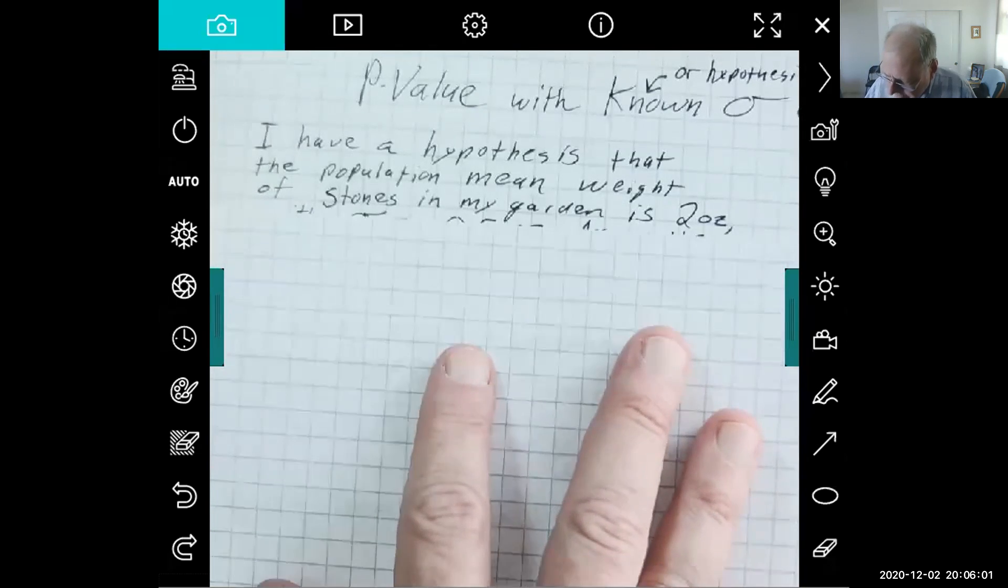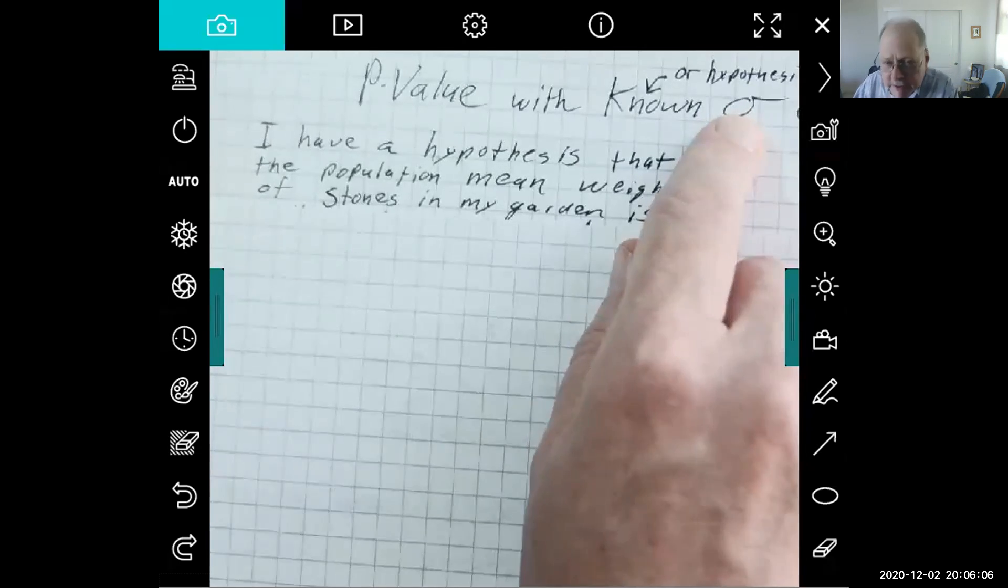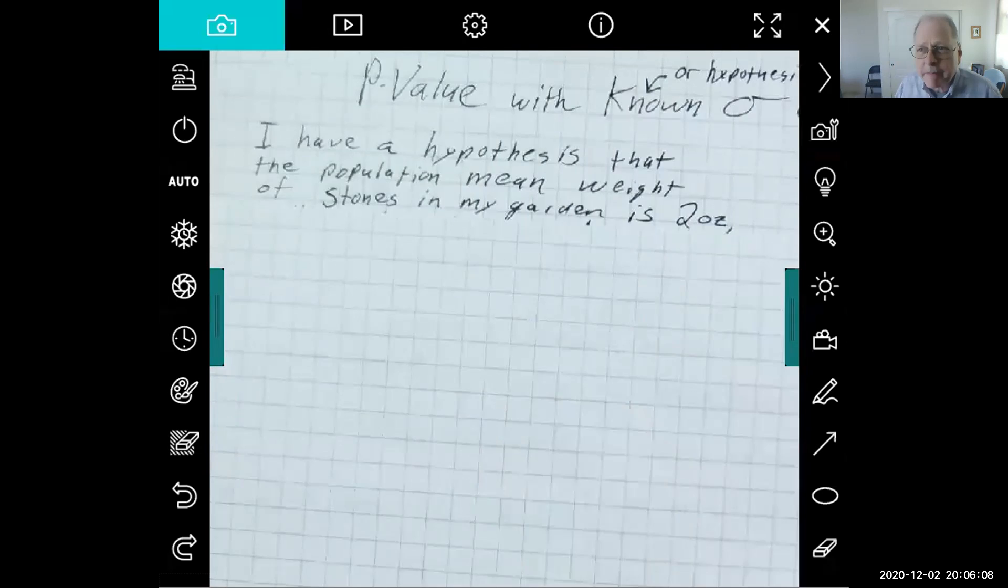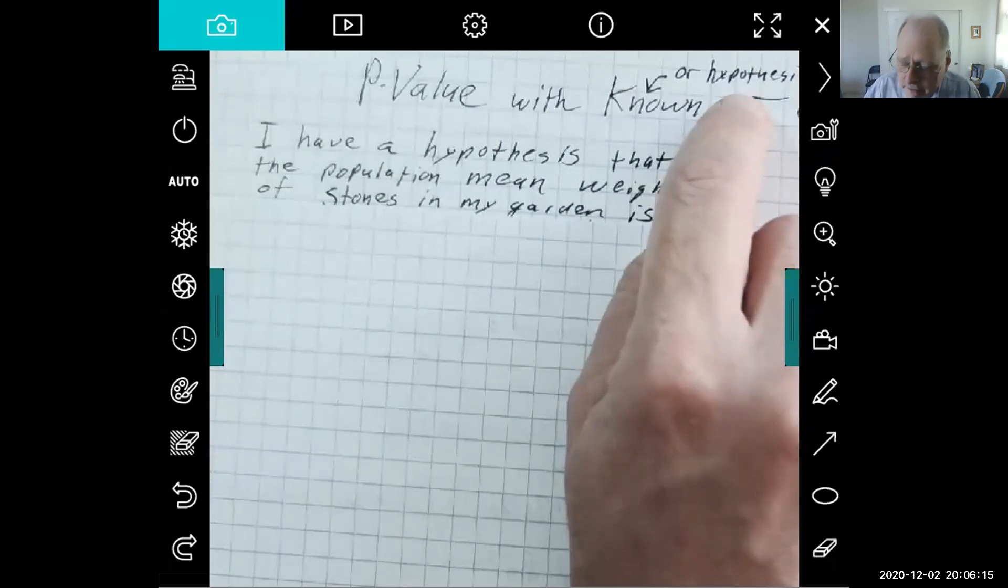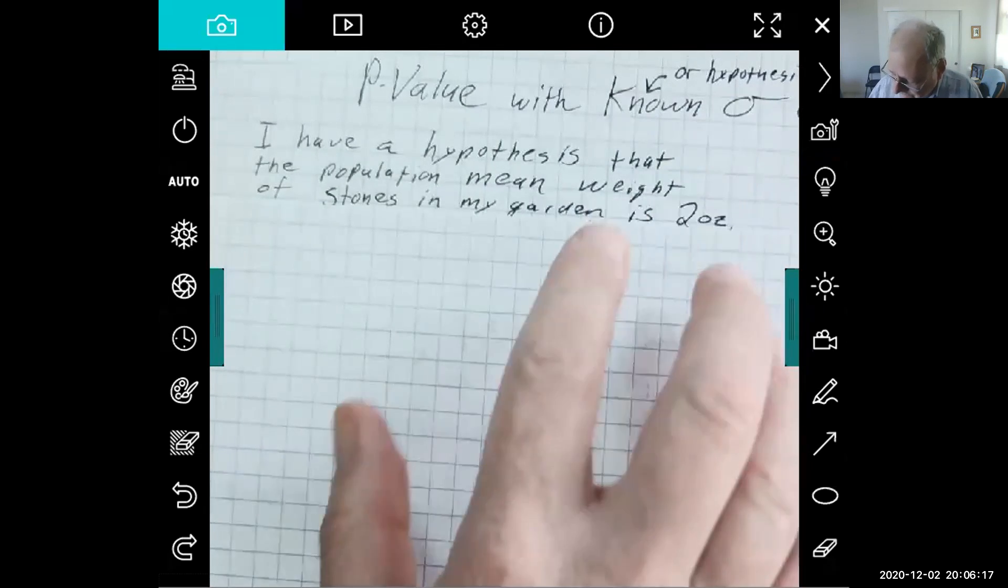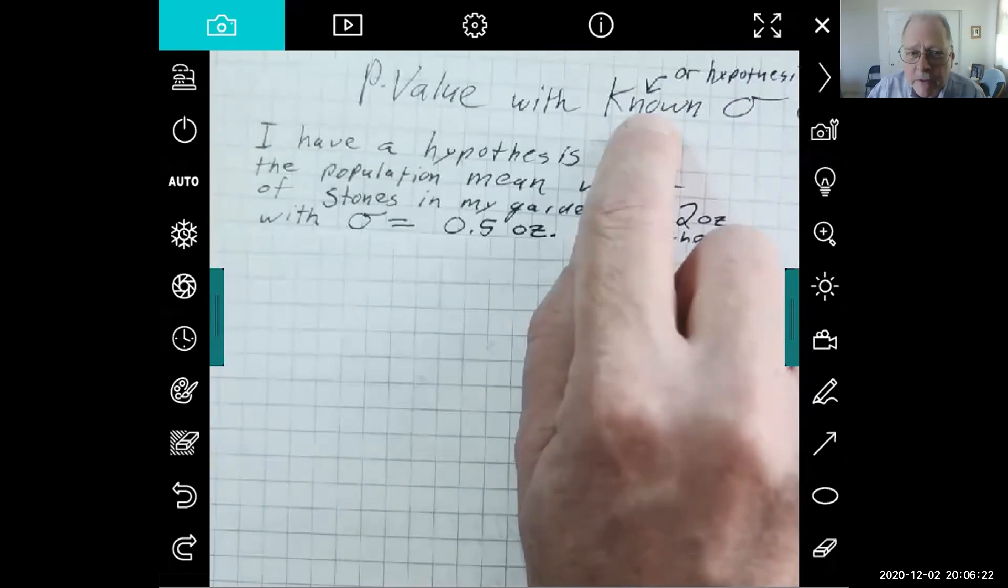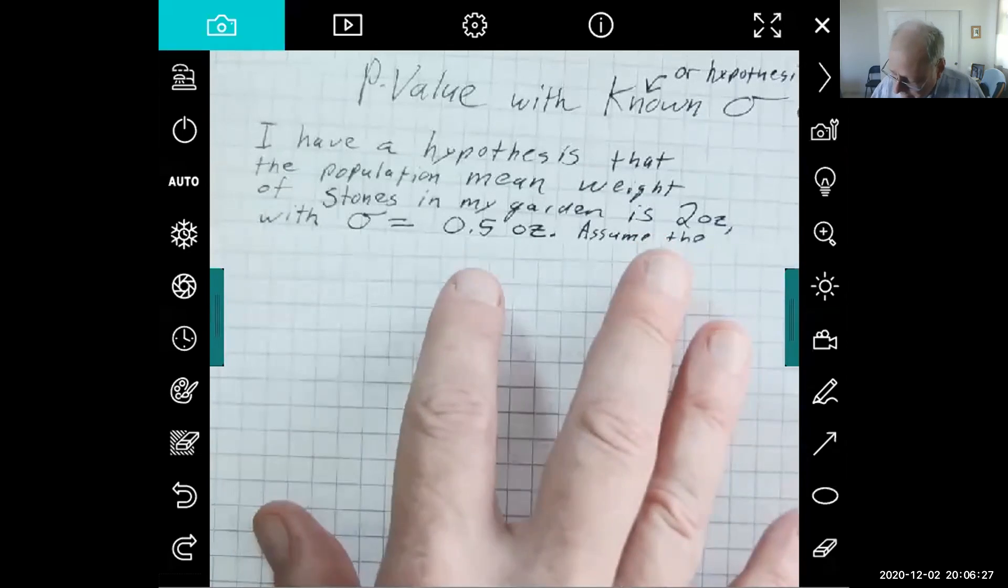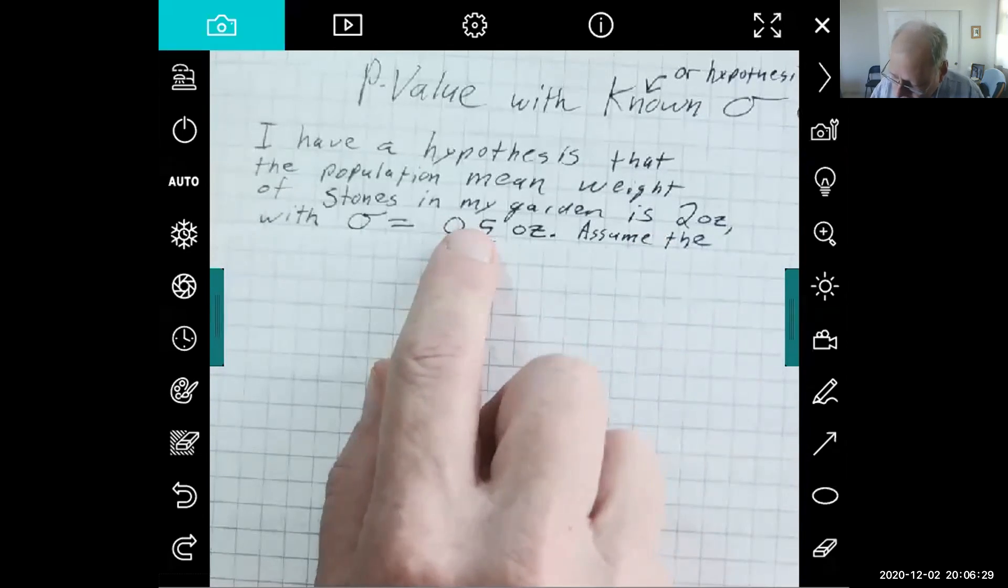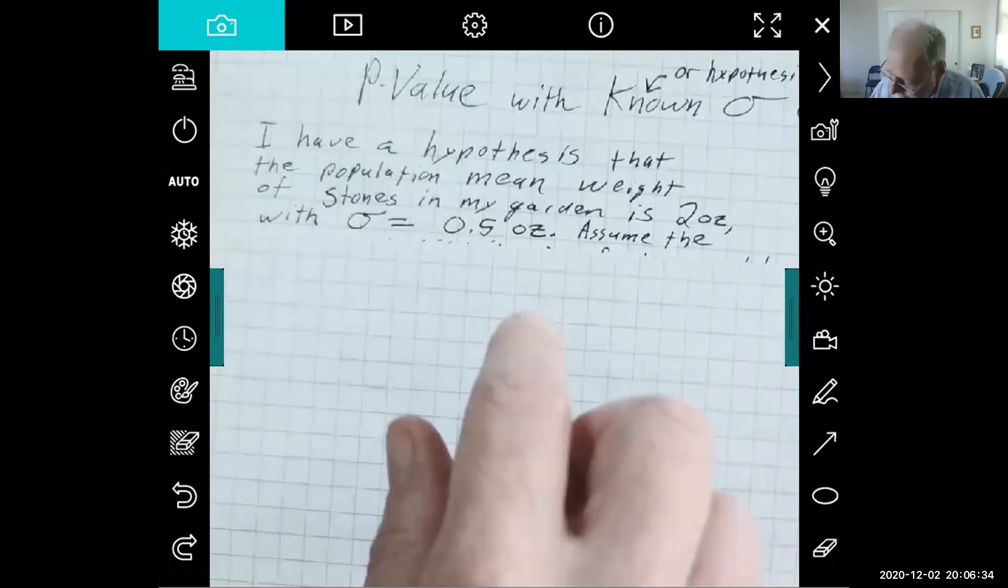And just to make things easy, part of my hypothesis or my educated guess about that big population of a few thousand stones—I have a hypothesis about the standard deviation also. So when I say known standard deviation, it's either known as a fact or it's part of your hypothesis, part of your assumption going in. So I'm going to say my hypothesis includes that the standard deviation is half an ounce, 0.5 ounces.